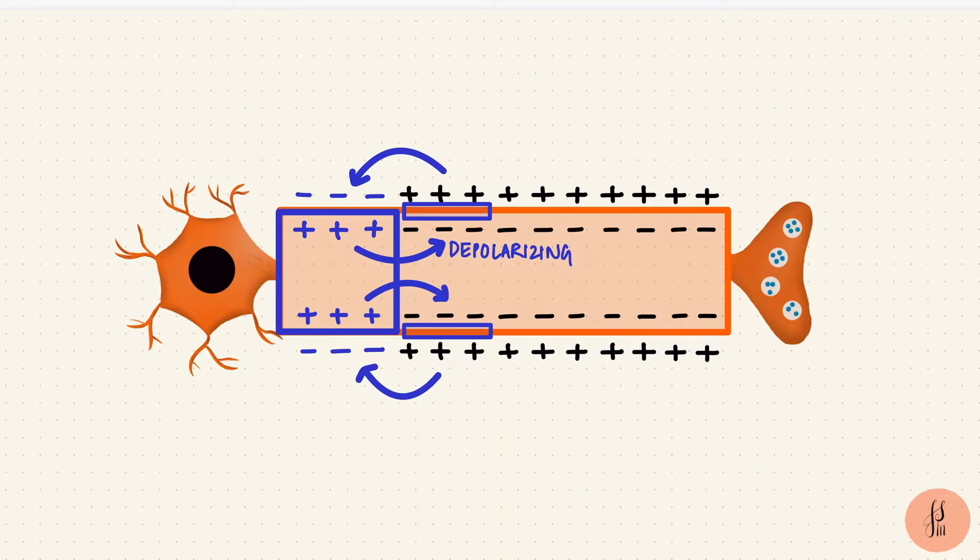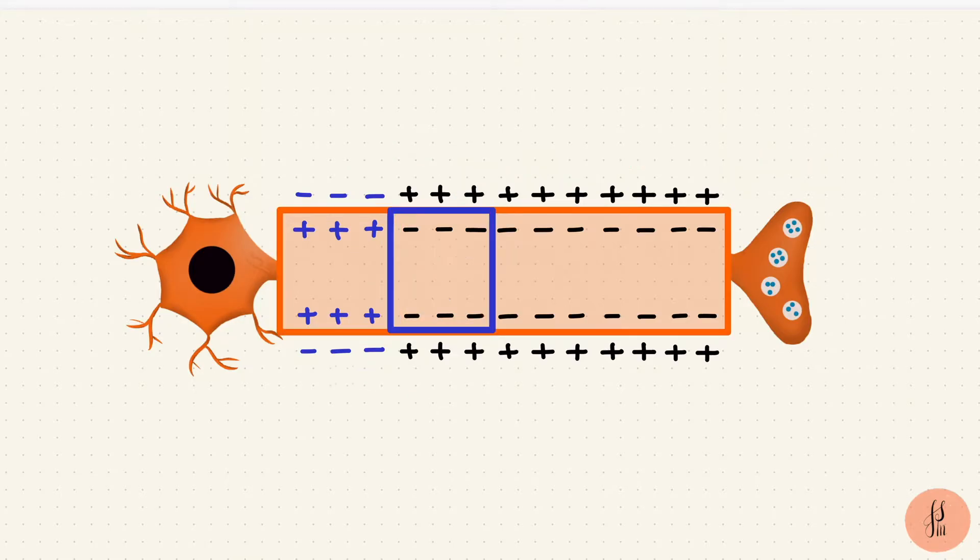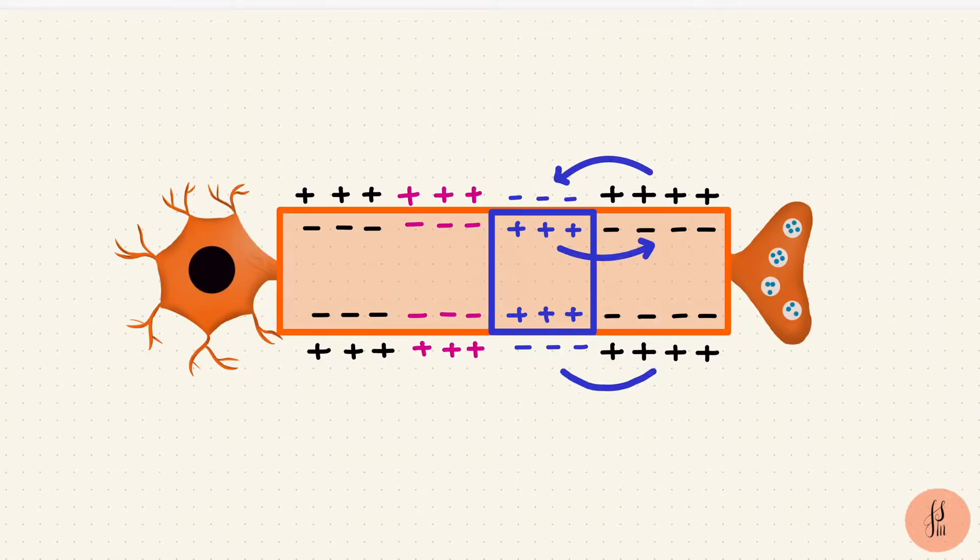If that portion of the membrane reaches threshold, the voltage-gated sodium channels will open and there will be another action potential. Now this is the active zone. And the same thing is going to happen again and again. The circular current flow.